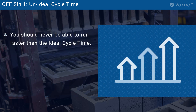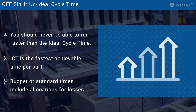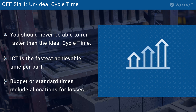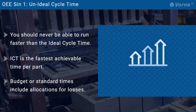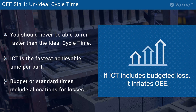You should never be able to run faster than the ideal cycle time, or ICT. It represents the absolute fastest cycle time per part that can be achieved on a sustained basis. Many companies set ICT based on readily available budget or standard times which include loss allocations. When budget or standard times are used for ICT, it artificially inflates your OEE score, hides losses, and limits your ability to improve.